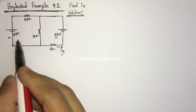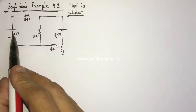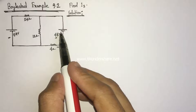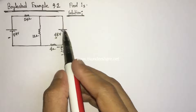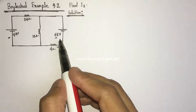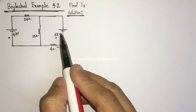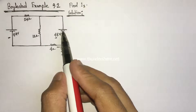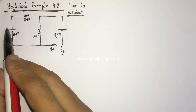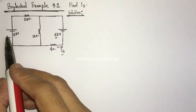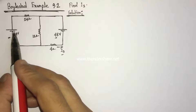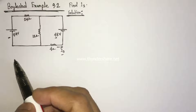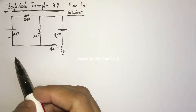When we consider the effect of the 54-volt voltage source, then the 48-volt voltage source needs to be replaced by a short circuit. And when we consider the effect of the 48-volt voltage source, then the 54-volt voltage source will be replaced by a short circuit.